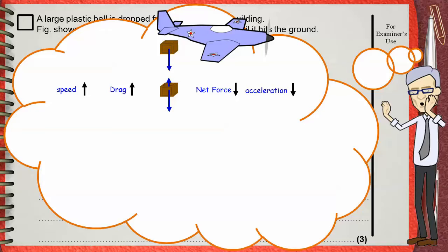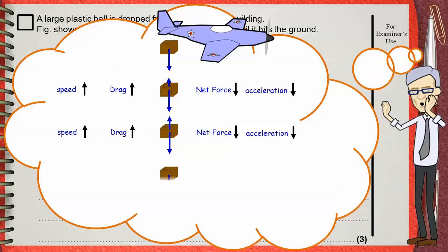So net force decreases and the acceleration decreases. As the ball continues to fall, its drag force increases. Again, we say that speed increases, drag increases, net force decreases and acceleration decreases. And so on — as long as this box falls, this is exactly what happens.